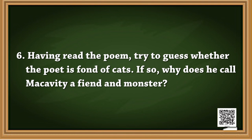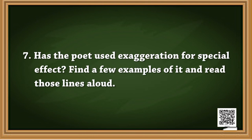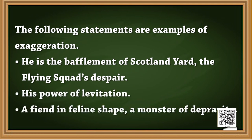Question number six reads: having read the poem, try to guess whether the poet is fond of cats. If so, why does he call Macavity a fiend and a monster? Moving on to question seven, this tests our comprehending ability or understanding of the poetry. The question goes: has the poet used exaggeration for special effect? Find a few examples of it and read those lines aloud. The examples of exaggeration are: first, 'He is the bafflement of Scotland Yard, the flying squad's despair.' Second, 'his powers of levitation.' And third, 'a fiend in feline shape, a monster of depravity.' All three statements are non-human — things that cannot commonly happen — and thus are called exaggeration for the criminal like Macavity.